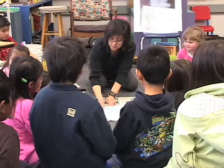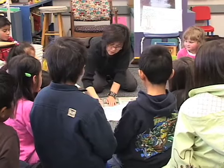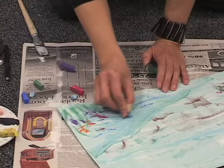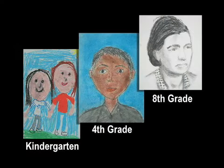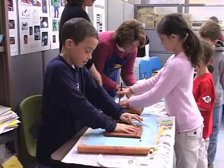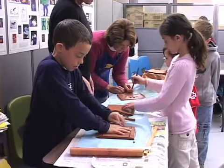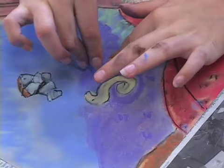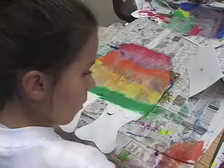The Art in Action program is taught in classrooms by trained teachers and volunteer docents. Nine program levels designed for K-8 students include 12 lessons using clay, oil and chalk pastels, charcoal, tempera, wire sculpture, and watercolor.